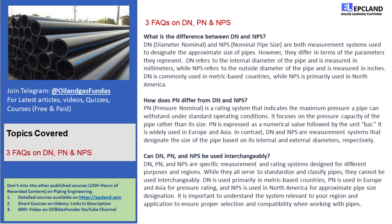On the other hand, NPS refers to the outside diameter of the pipe and is measured in inches. So, while DN focuses on the internal diameter, NPS looks at the external diameter of the pipe. Additionally, DN is commonly used in metric-based countries, while NPS is primarily used in North America.